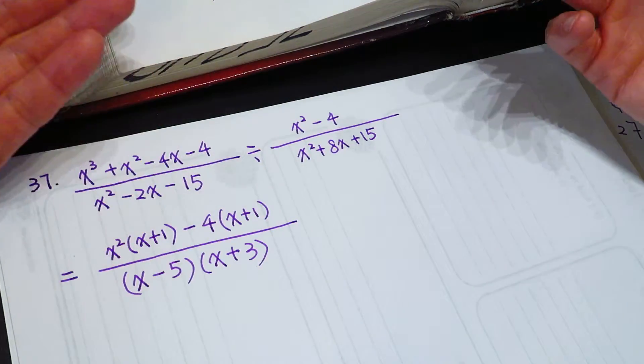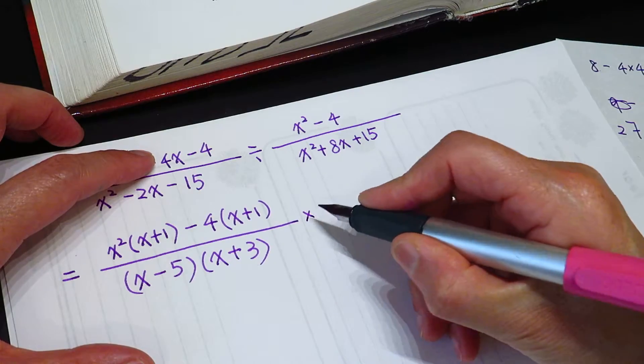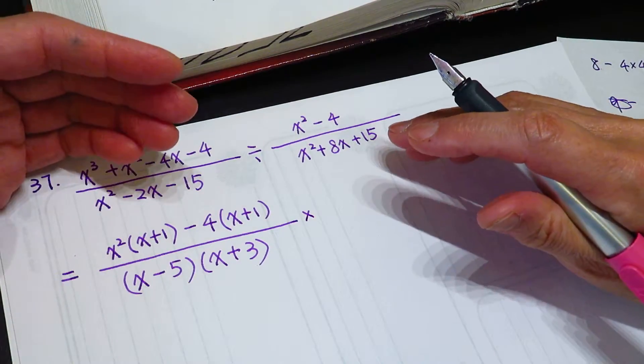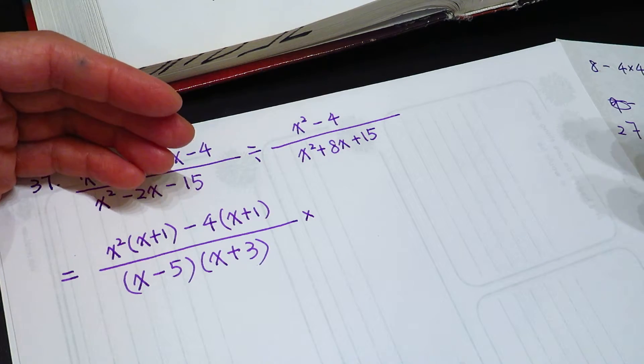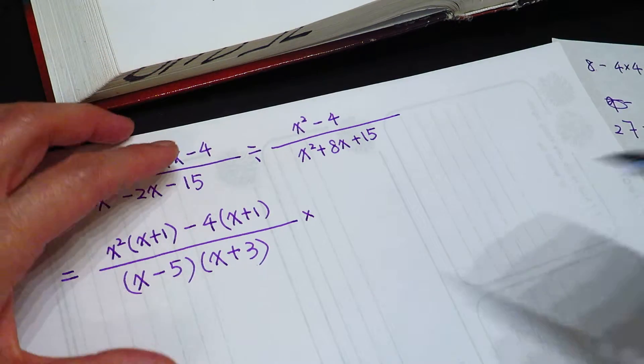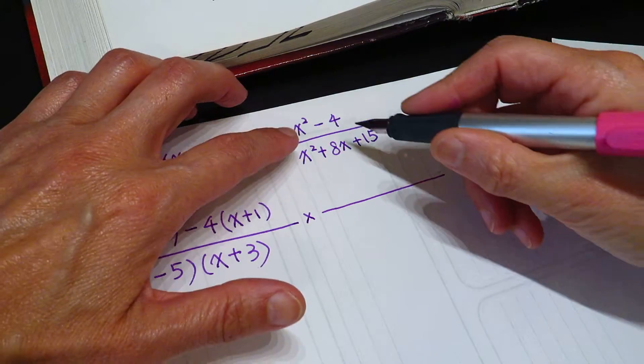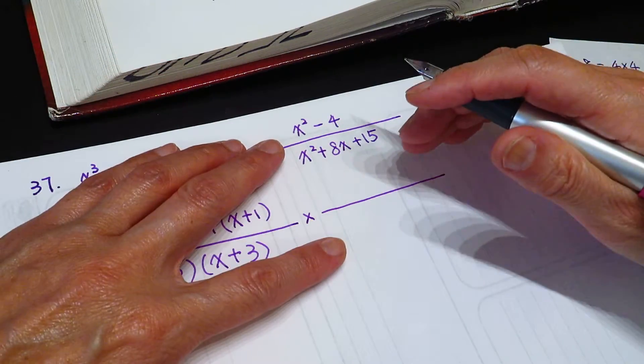the dividing sign, we can flip it over. Divide one number equal to time its reciprocal. Okay, so this one becomes. I will not do that step